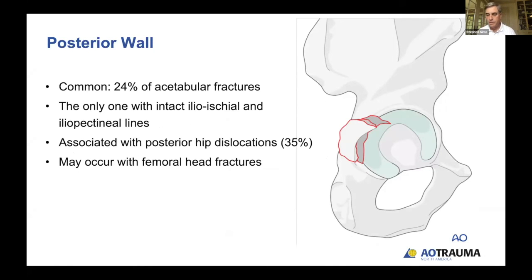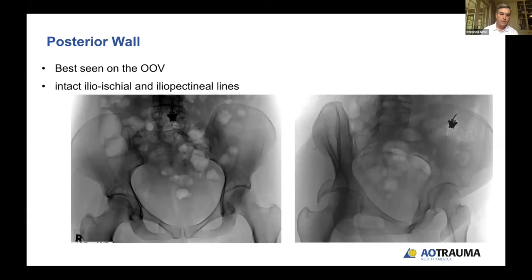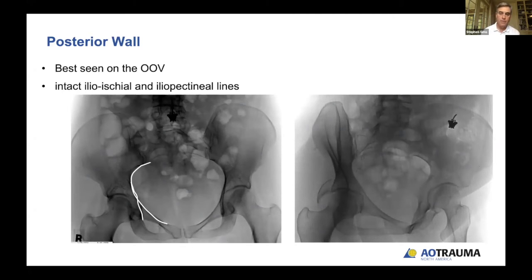The posterior wall is a very common fracture — about a quarter of the fractures you'll see in practice. It's the only one where the ilioischial and iliopectineal lines are intact. About a third of the time it'll have a posterior hip dislocation, and you may see femoral head fractures as well. You can see the iliopectineal and ilioischial lines both intact on this image. It's not uncommon — I get about two or three times a year a patient show up with a significant posterior wall fracture missed on the initial AP x-ray. On the obturator oblique view, a large posterior wall fracture is very obvious.